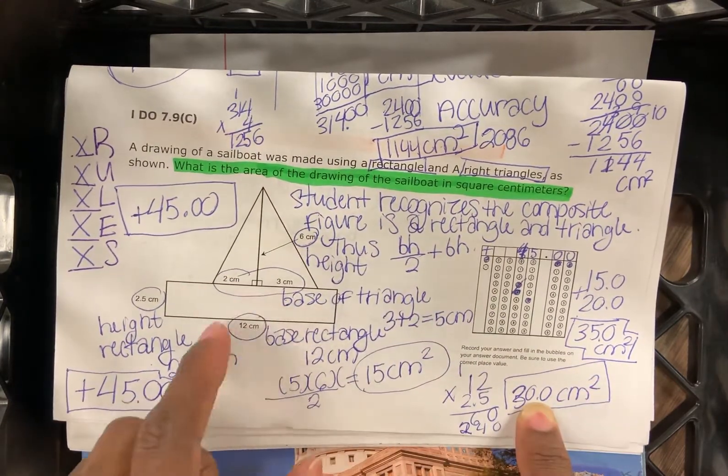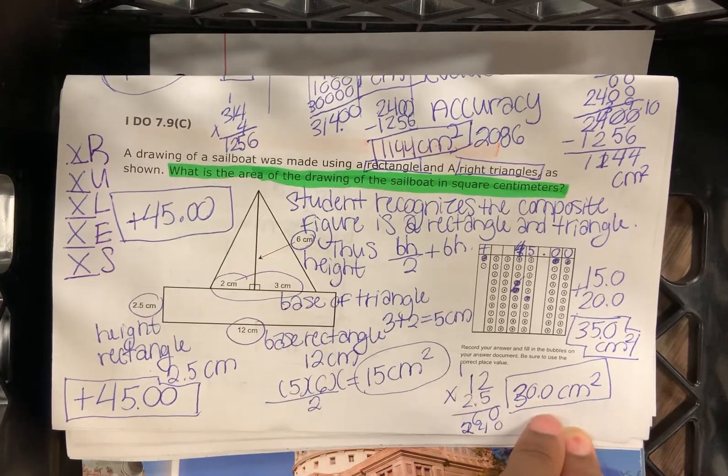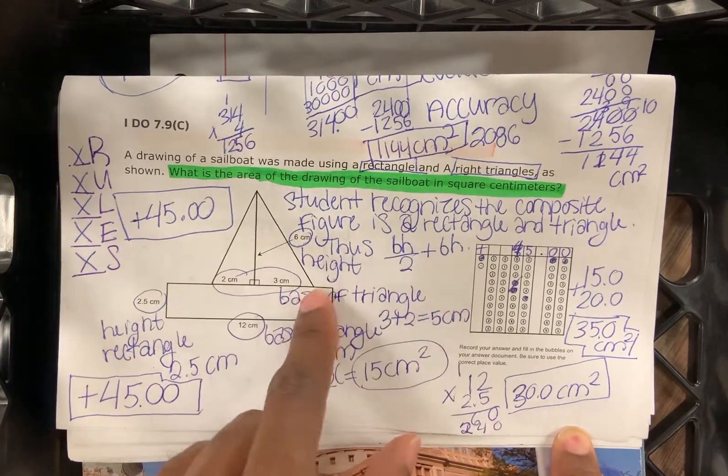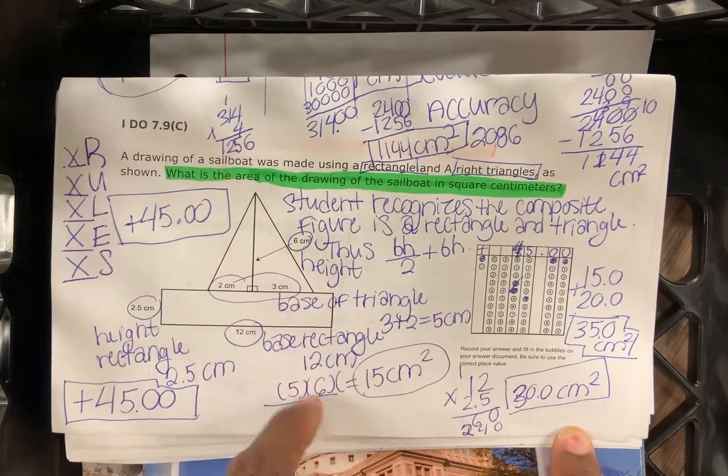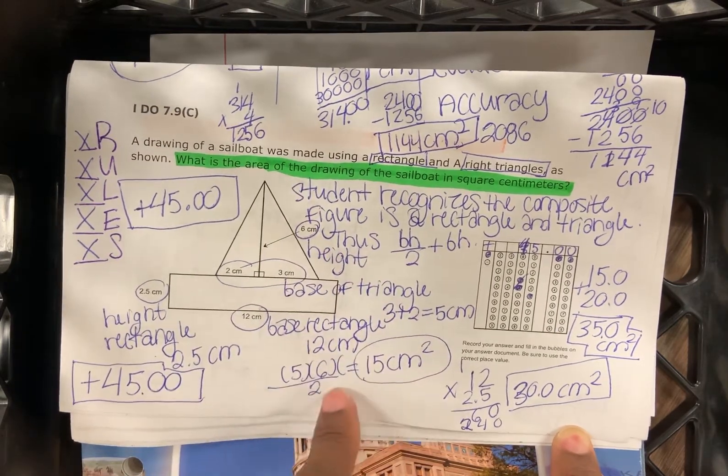So 12 multiplied by 2.5 is going to be 30. And then base times height divided by two, the base would be two plus three, which would be five. And the height of the triangle would be six. So five times six is 30 divided by two is 15.